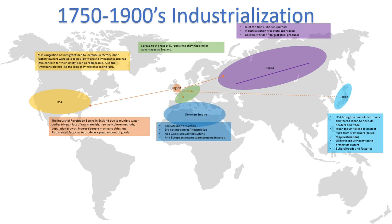Now we go to the Ottoman Empire. As you can see, there is no line connecting England to the Ottoman Empire — this is because they did not industrialize or modernize. They were known as the sick man of Europe, slowly shrinking and declining in power. They had a string of weak, unqualified sultans, and the European powers in the north that were growing stronger were pressing inward into the Ottoman Empire.